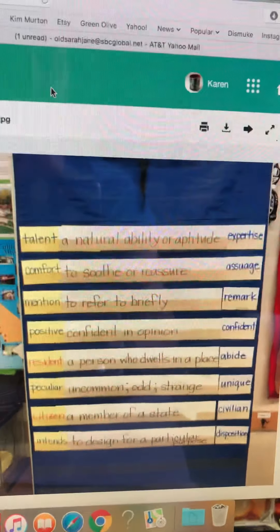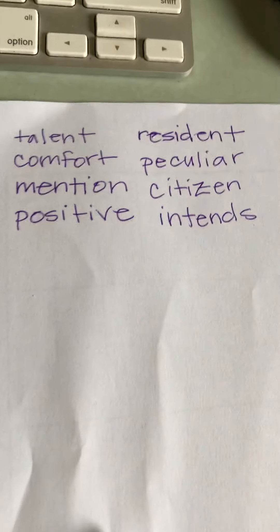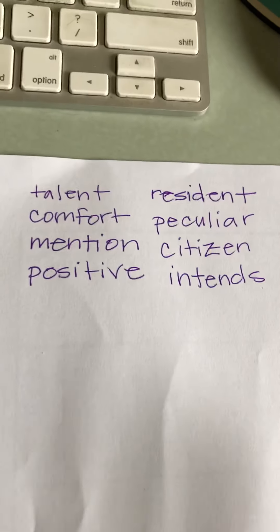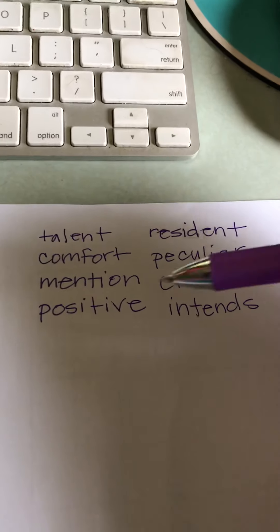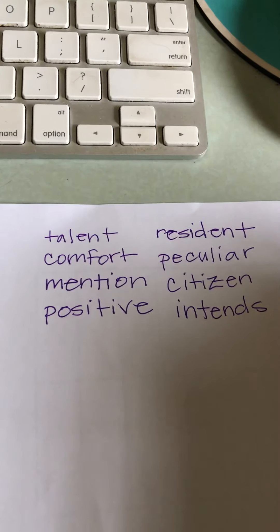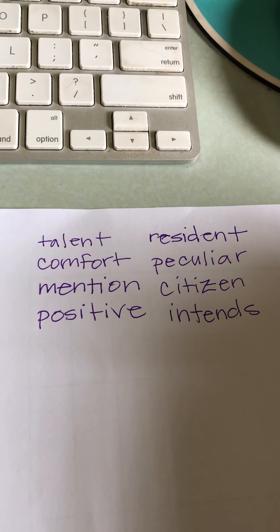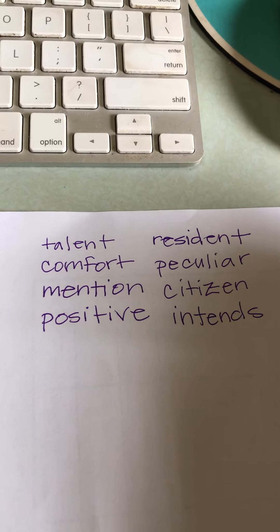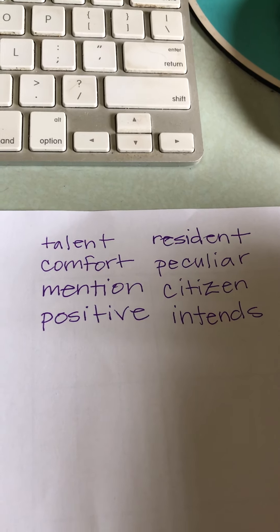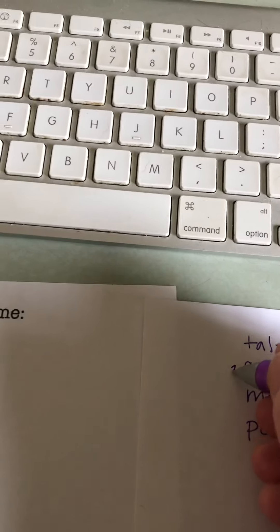I wrote down the words — I was just looking at the list and I wrote the words on a piece of paper. The first thing I'm going to do is put them in ABC order, in alphabetical order. I'm looking for the word that comes first in the alphabet. Comfort and citizen both start with C's, and I'm going to put citizen first because CI comes before CO. So citizen is word number one and comfort is word number two.